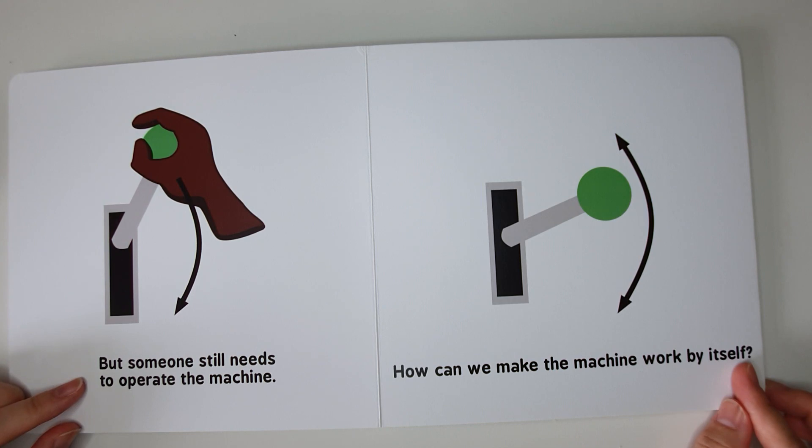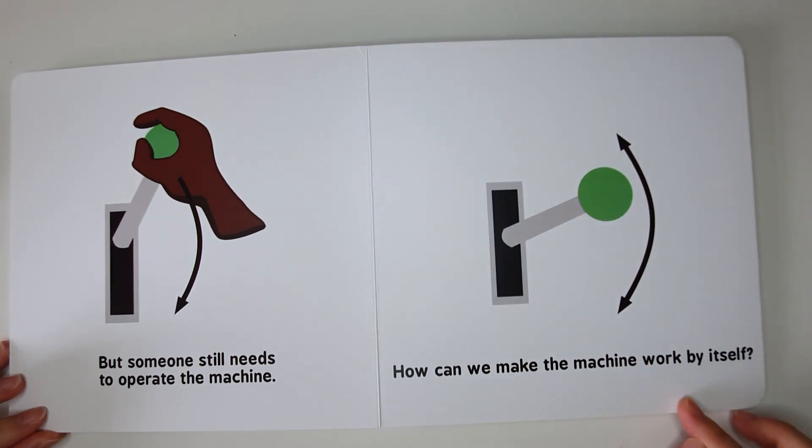But someone still needs to operate the machine. We need someone to pull the knob down to cut the circle. How can we make the machine work by itself?